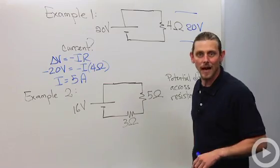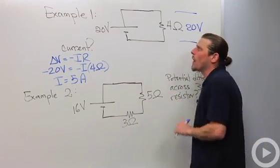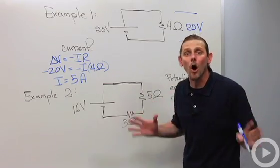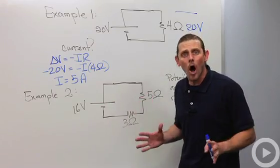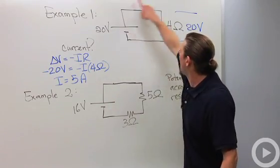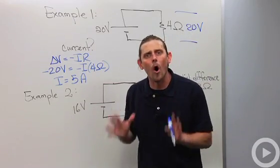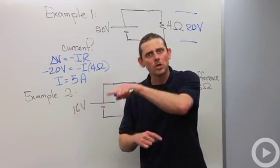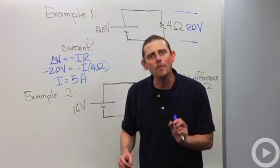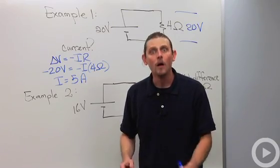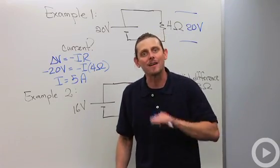Let's do the second way. The second way involves something called Kirchhoff's law. Kirchhoff said that if you go around a loop in a circuit and you keep track of all the potential differences as you go around, by the time you get back to where you started, the net potential difference has got to be zero.